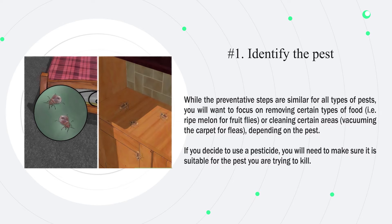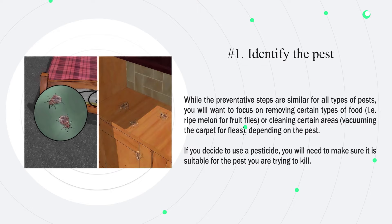Number one: identify the pest. While the preventative steps are similar for all types of pests, you will want to focus on removing certain types of food — such as ripe melon for fruit flies — or cleaning certain areas, like vacuuming the carpet for fleas, depending on the pest. If you decide to use a pesticide, you will need to make sure it is suitable for the pest you are trying to kill.